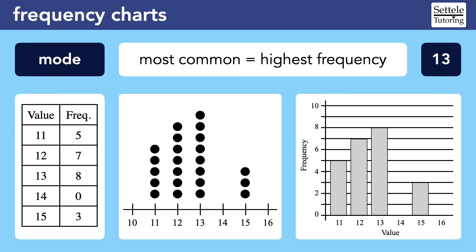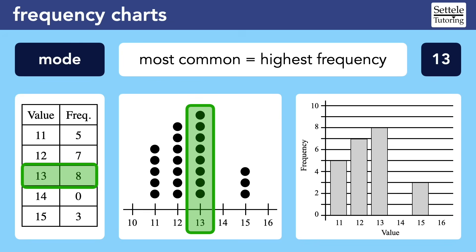The mode is also easy to find on frequency charts. The mode is the most common number in the dataset, so we're looking for the highest frequency. On the frequency chart, the highest frequency is 8, so the mode is 13. On the dot plot and histogram, we're just looking for the tallest column — it's obvious that 13 has the most dots and the tallest rectangle. To be clear, the mode is 13, not 8. The answer should always be a value, not a frequency. A common student mistake is saying the mode is 8, but 8 never appeared in the original dataset at all.